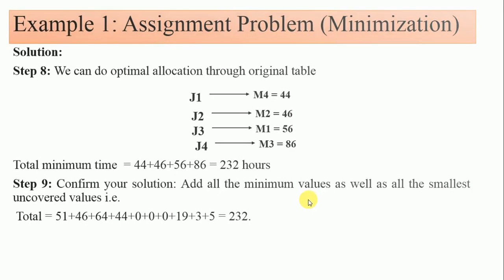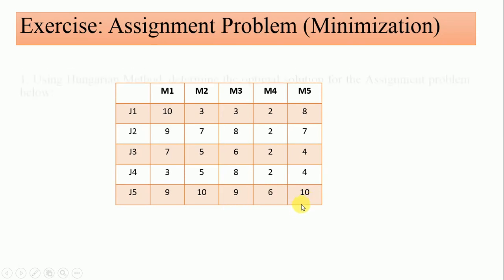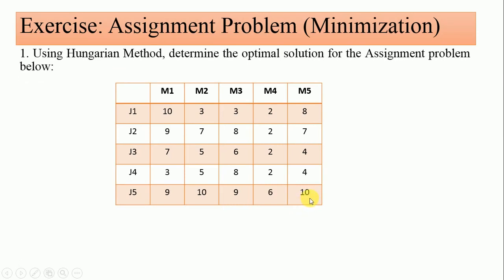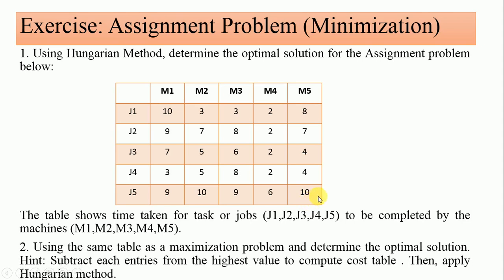I hope you've learned something new in this video. It will be a very good thing for you to practice at your own leisure time. Use the Hungarian method to determine the optimal solution for the assignment problem — this is a five-row and five-column exercise. Follow the same process and drop your answer in the comment section. If you need any help, you can contact via email or WhatsApp. You can also try assuming this given table is a maximization problem and use the Hungarian method to find the optimal solution. Thank you for listening, see you in the next video.